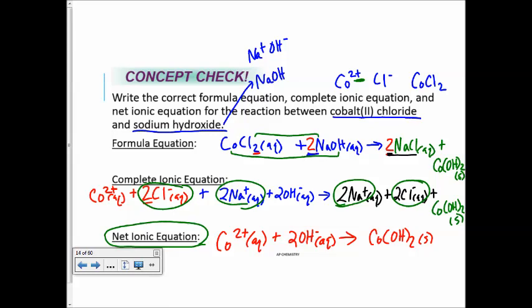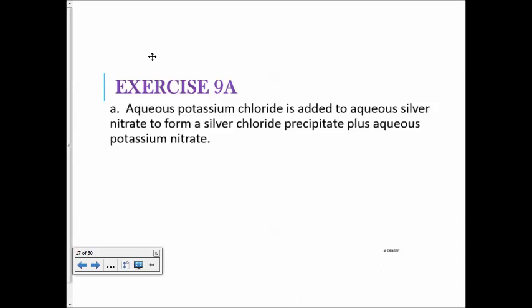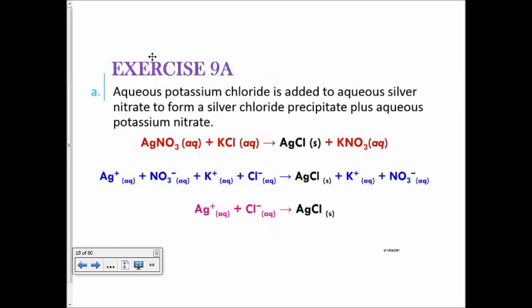Exercise 9A answer: aqueous potassium chloride added to aqueous silver nitrate forms silver chloride precipitate plus aqueous potassium nitrate. They even told you the precipitate and gave you AQ for potassium nitrate. In the balanced molecular reaction there are no ions. In the complete ionic, you break apart everything that's AQ. The net ionic shows only the actual chemical bond forming — the ionic Coulombic attraction — between silver and chloride: Ag⁺(aq) + Cl⁻(aq) → AgCl(s).